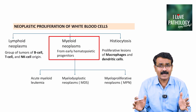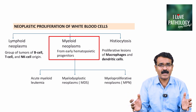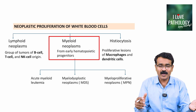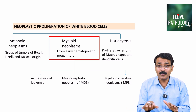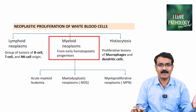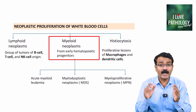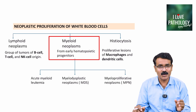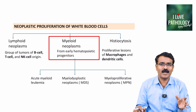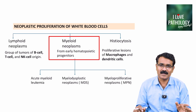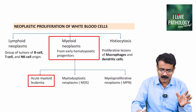We saw this classification in my earlier session. White blood cell neoplasms are categorized into lymphoid neoplasms, myeloid neoplasms, and histiocytosis. If you are new to this video, please go back to my earlier video and watch that as well. The myeloid neoplasms are further categorized into acute myeloid leukemia, myelodysplastic neoplasms, and myeloproliferative neoplasms. Let's concentrate on acute myeloid leukemia today.